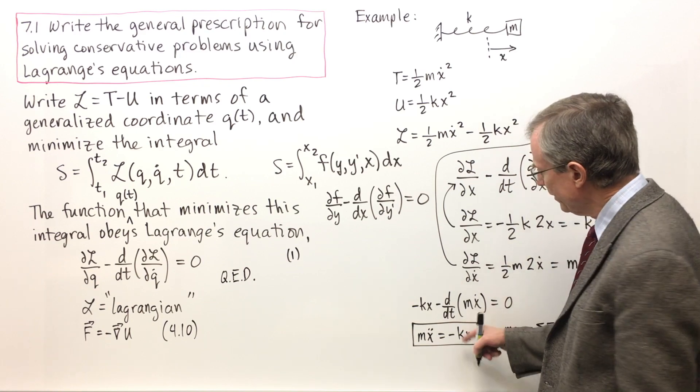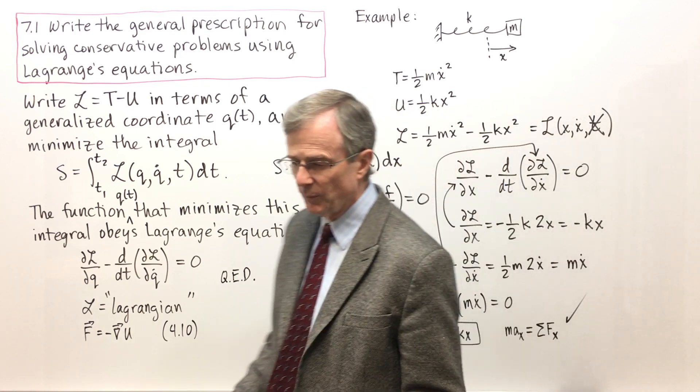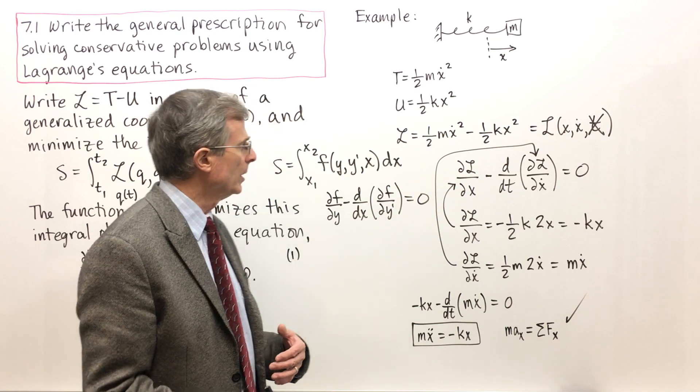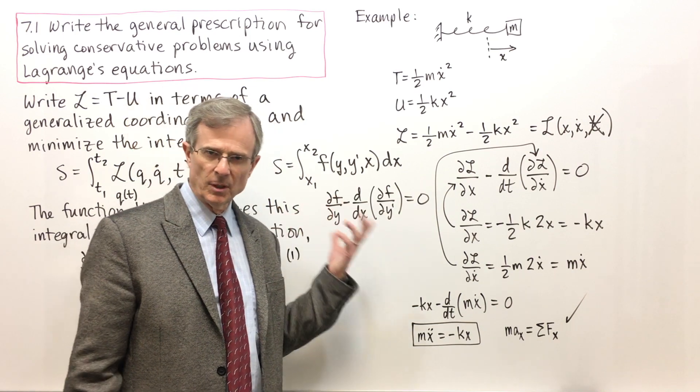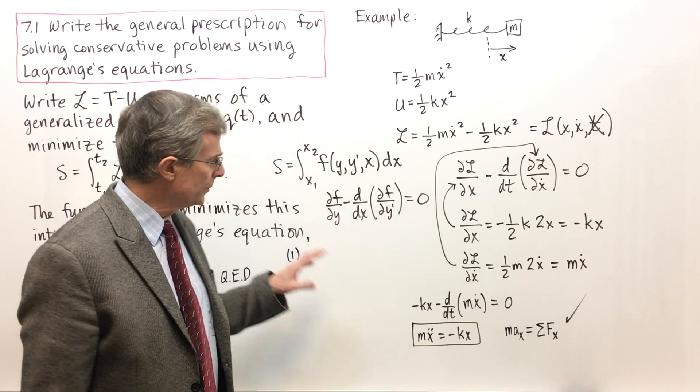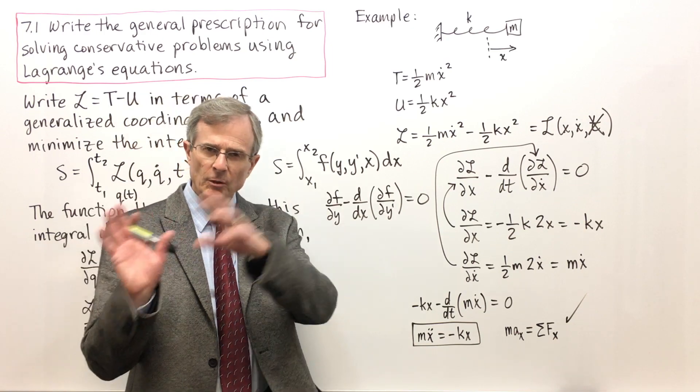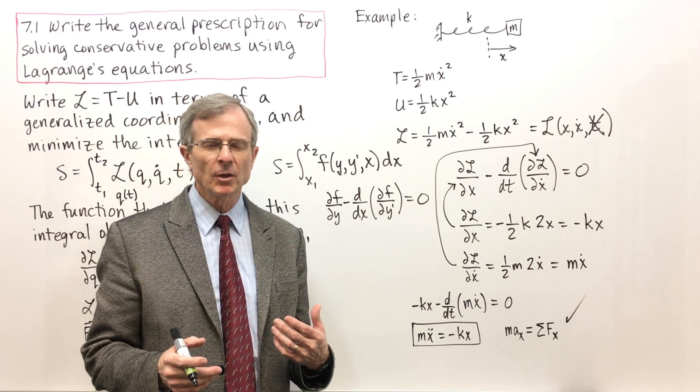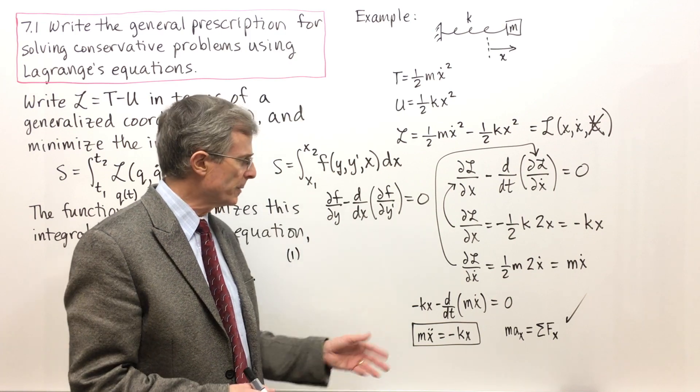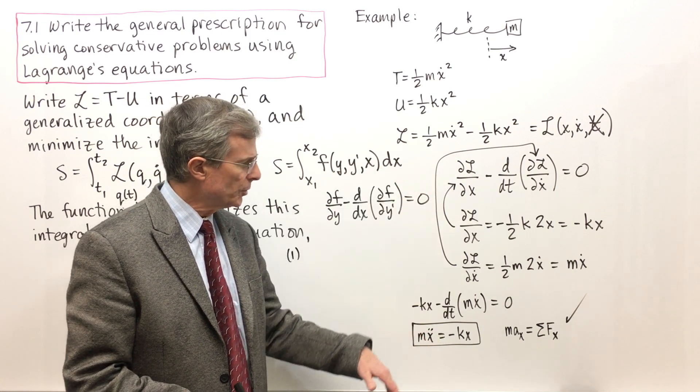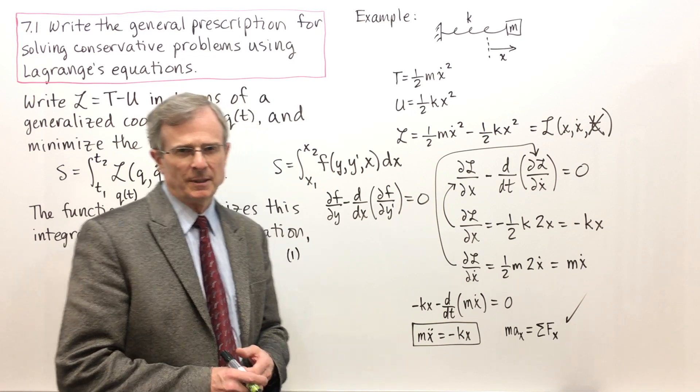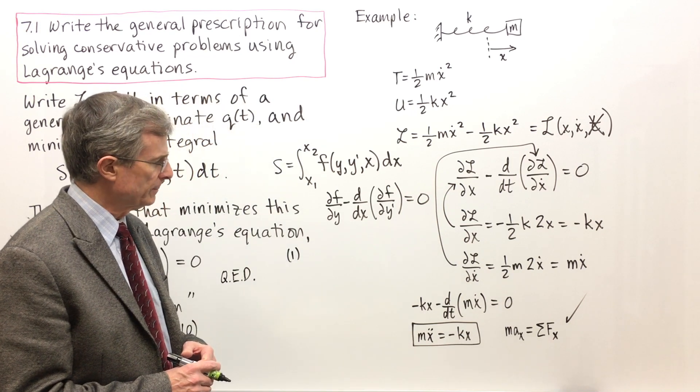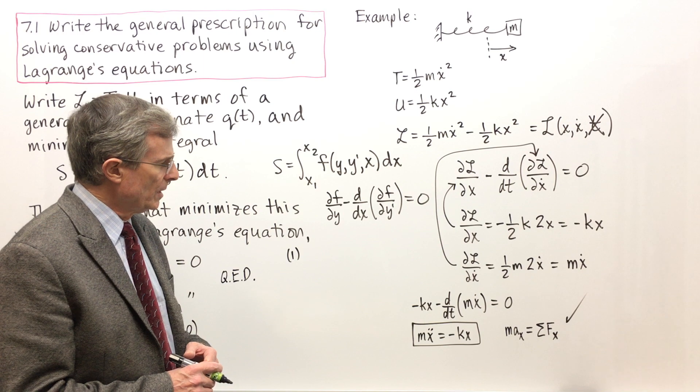So we have recovered a known result, one that we could have gotten from Newton's second law, using Lagrange's equations. The proof that Lagrange's equations gives the same physics as Newton's second law can be done more generally than this, but I think this is enough to show you and make you believers that Lagrange's equations work.